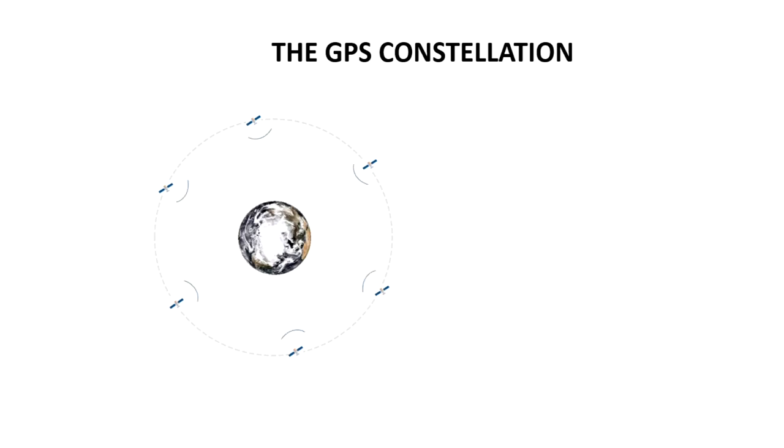All GPS satellites send out a simultaneous pulse every second. A receiver on the ground receives pulses from a few satellites. By solving a set of equations with data provided by the satellites, the receiver can determine its location in 3D and time.